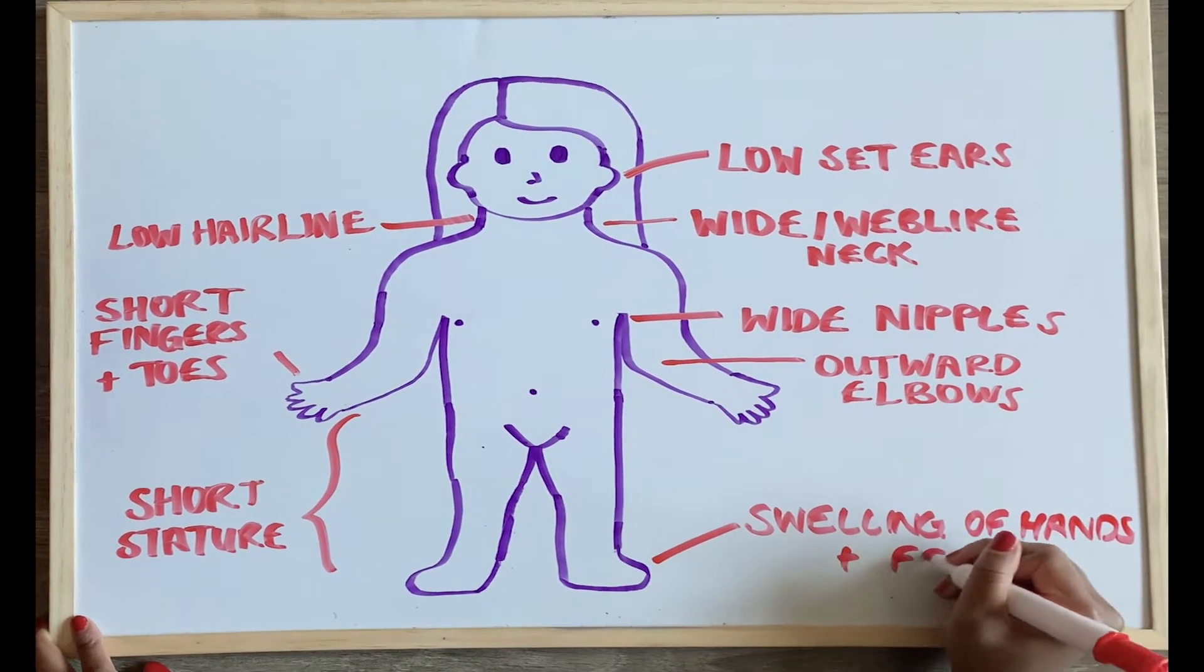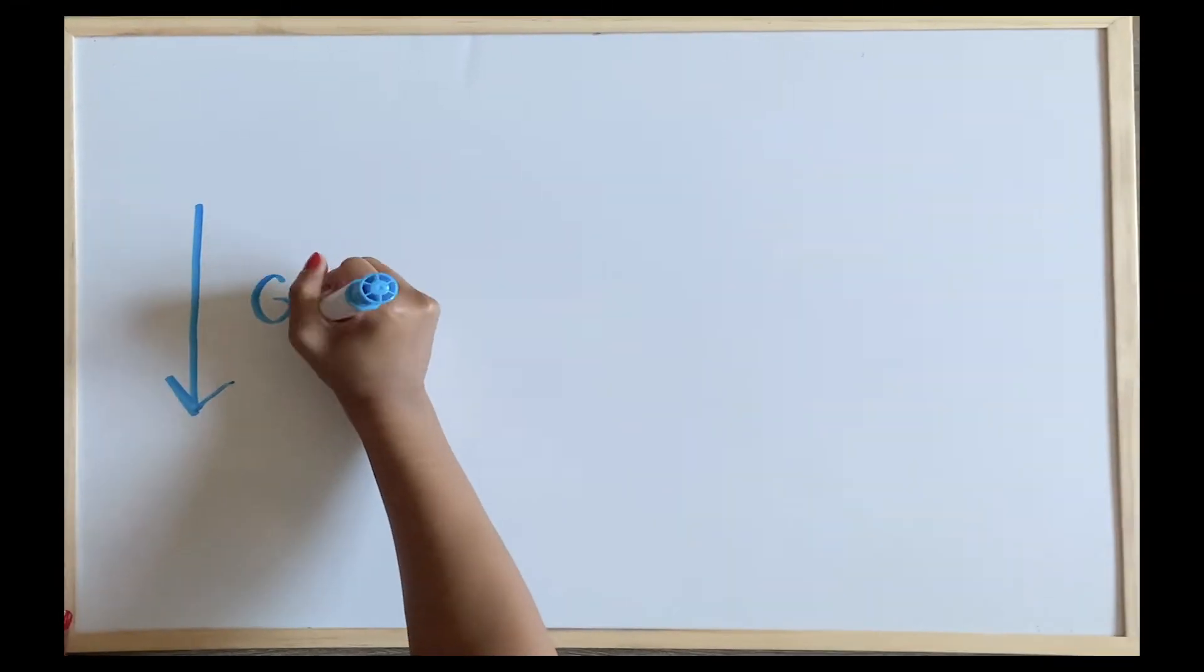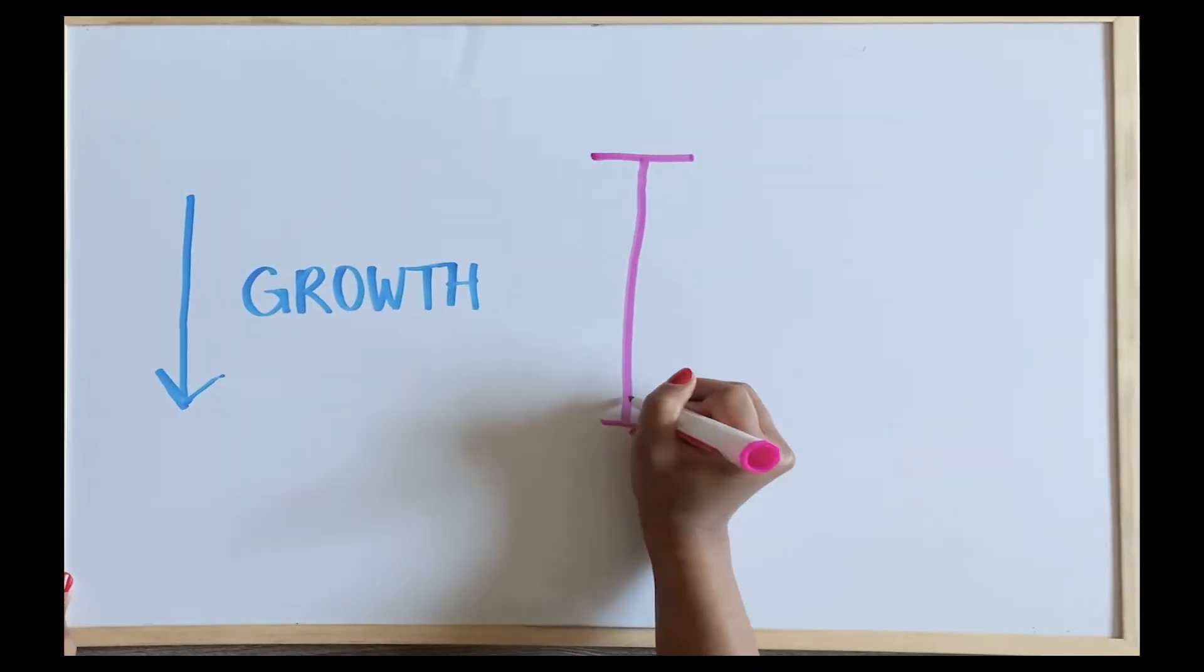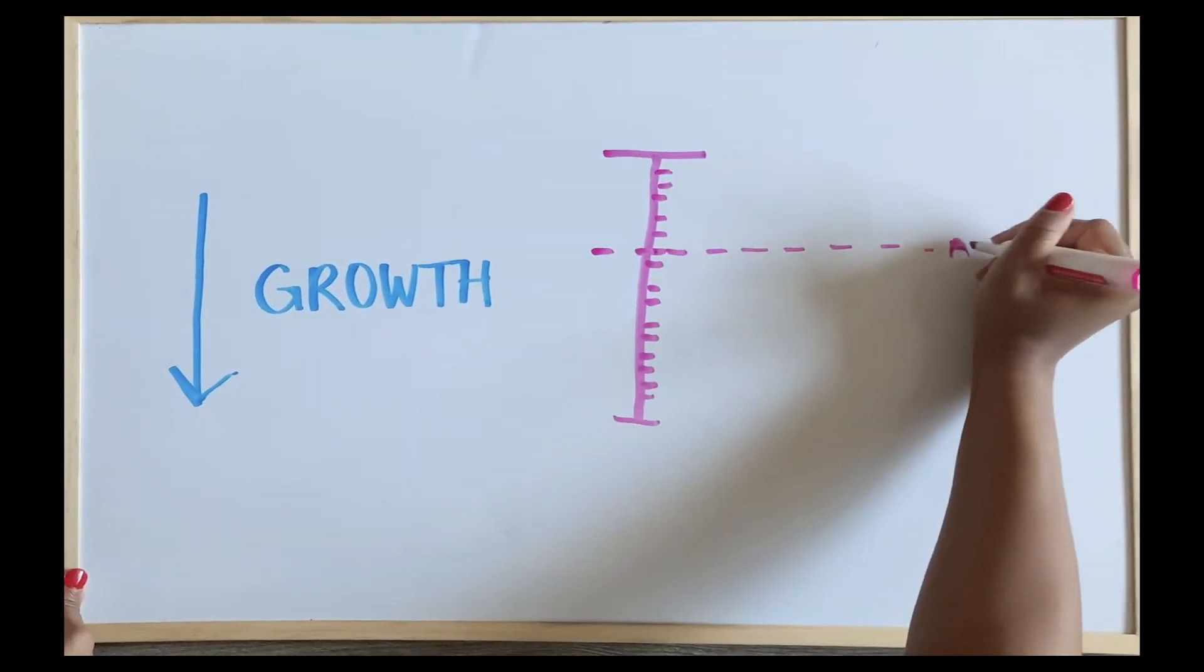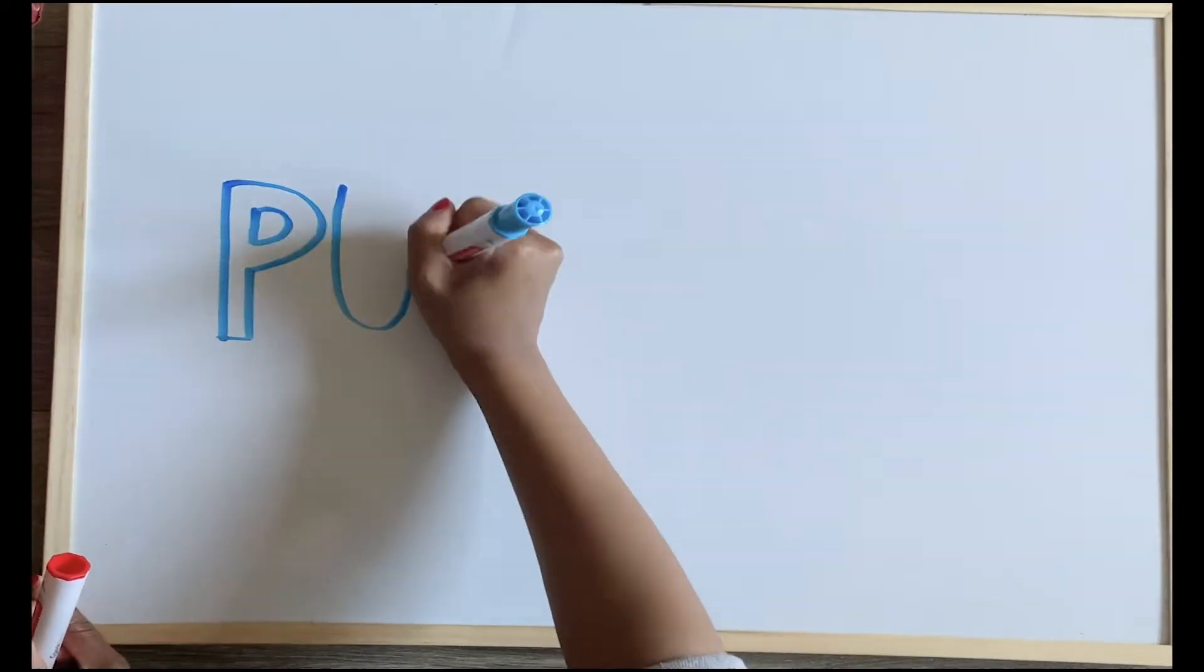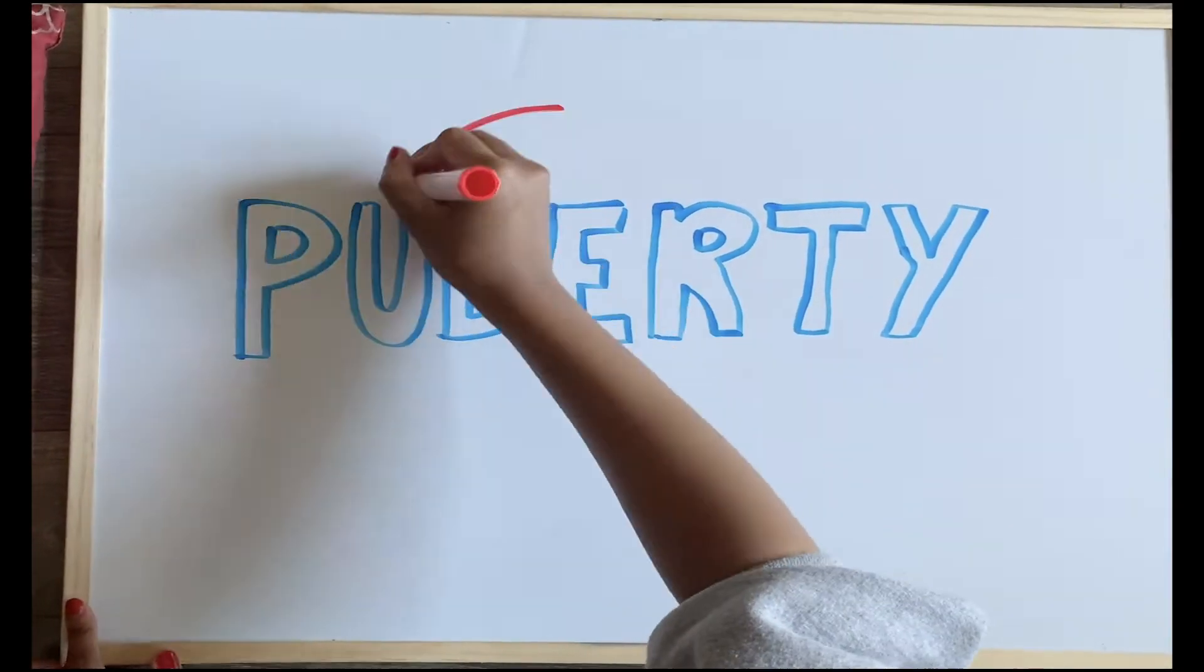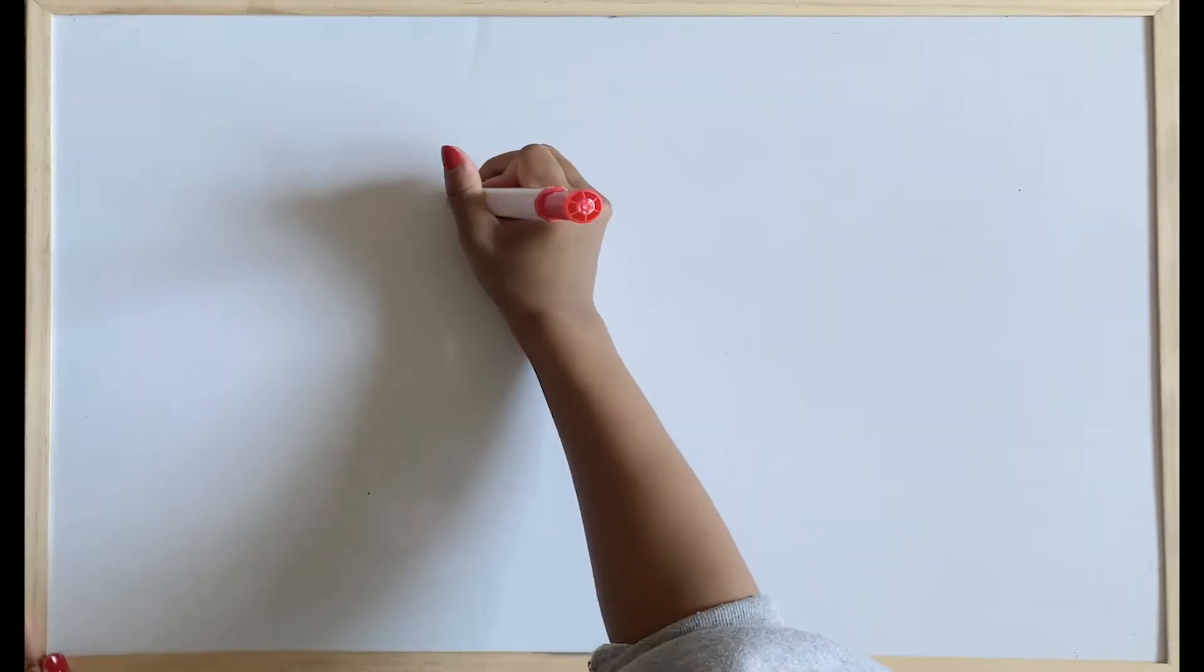Some of the most common symptoms that arise later in life are slowed growth, a shorter-than-average adult height, failure to begin sexual changes expected during puberty, and infertility due to premature ovarian failure.